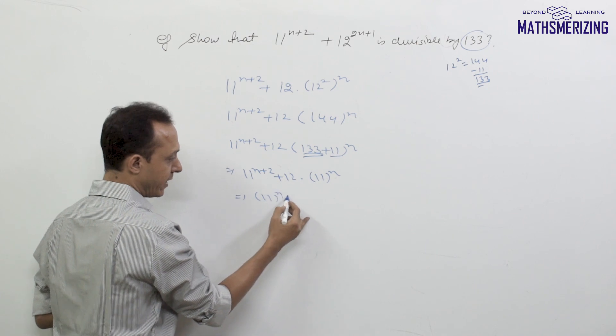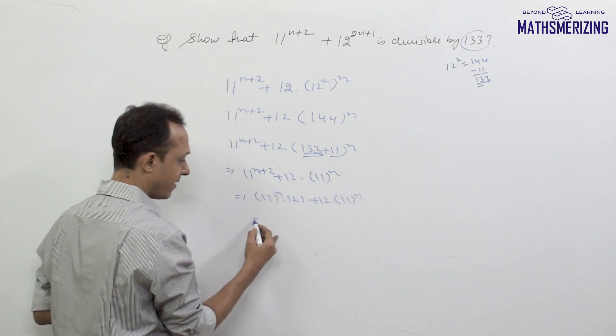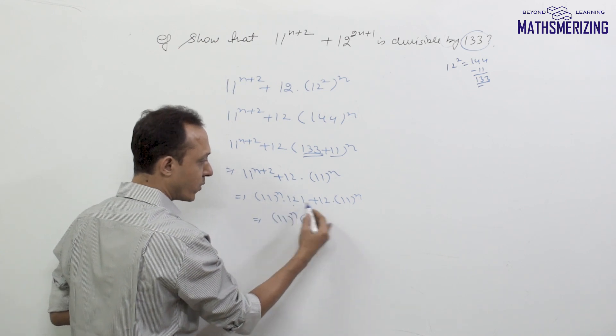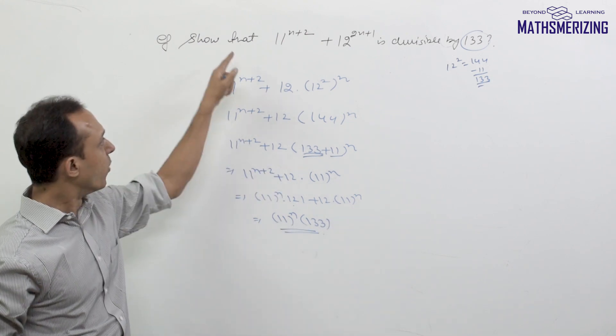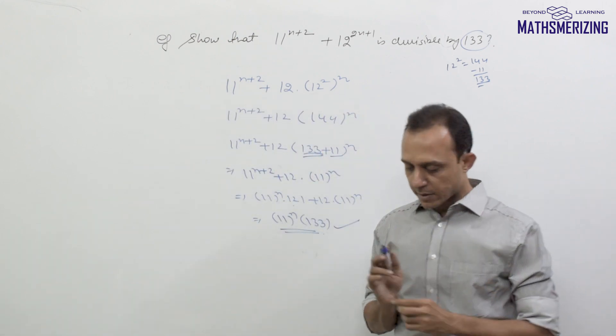So I can write it as 11^n × 121 + 12 × 11^n, which factors as 11^n × (121 + 12). Here, 121 plus 12 equals 133, so this expression is divisible by 133.